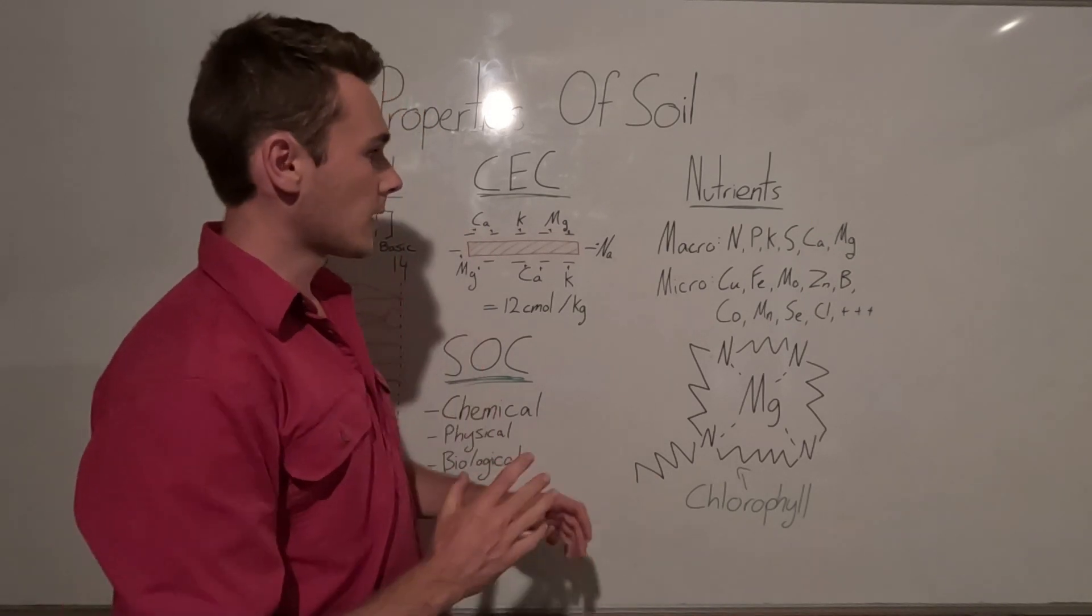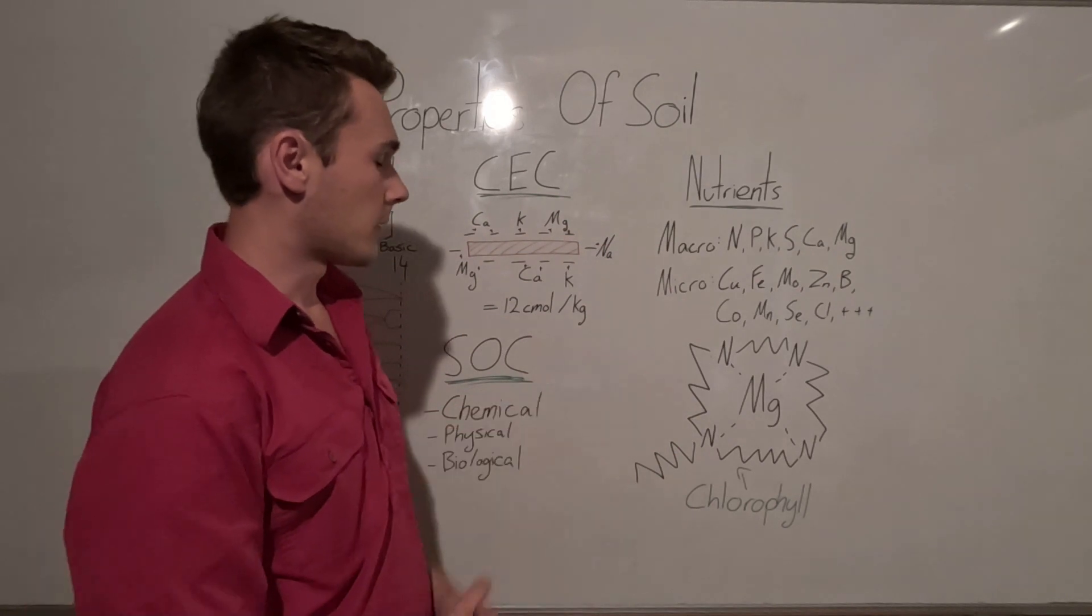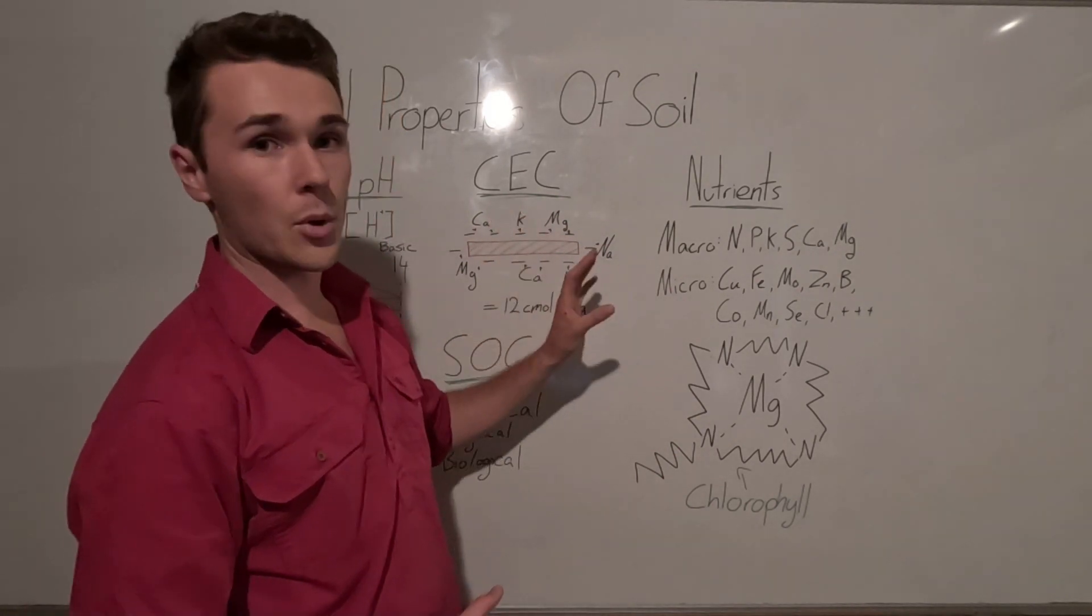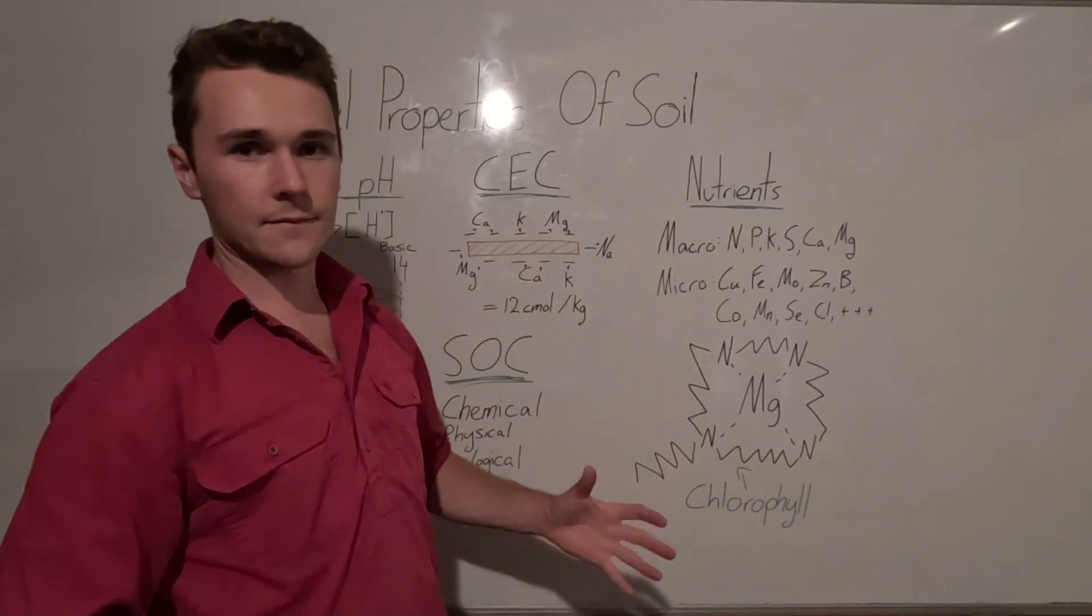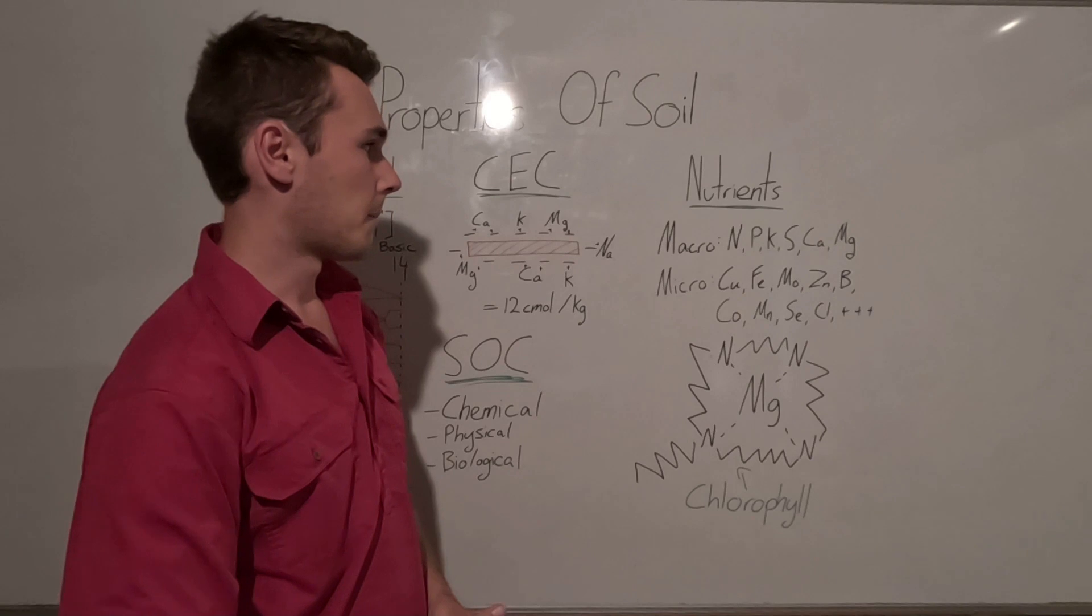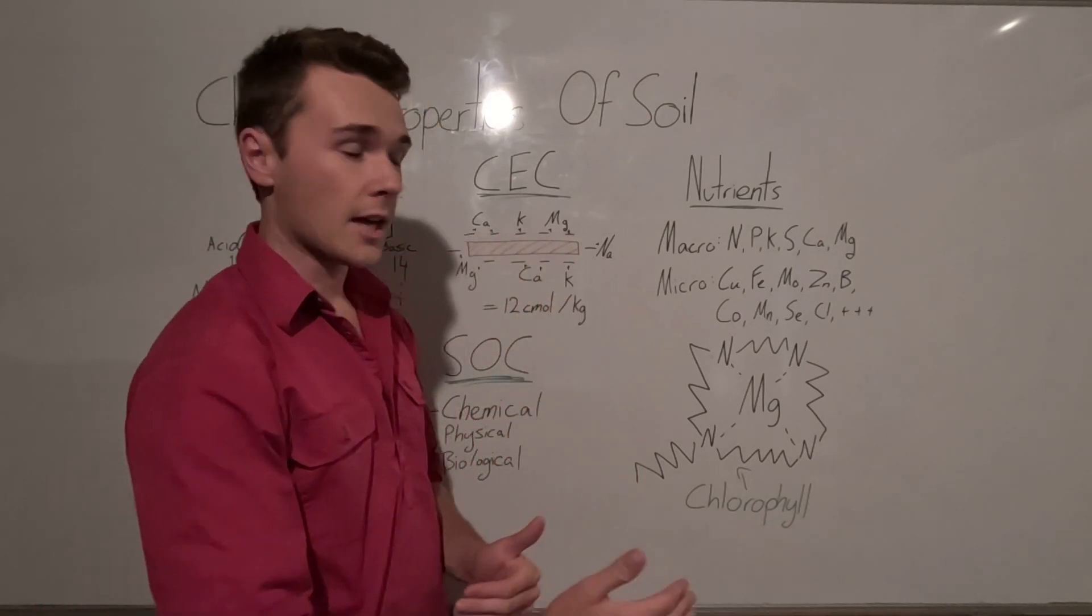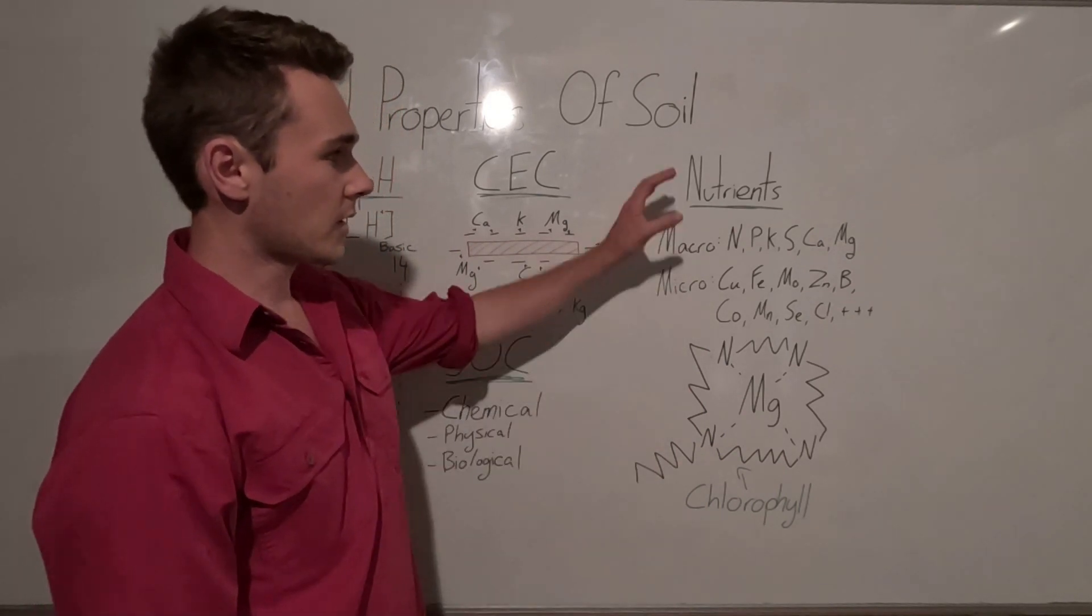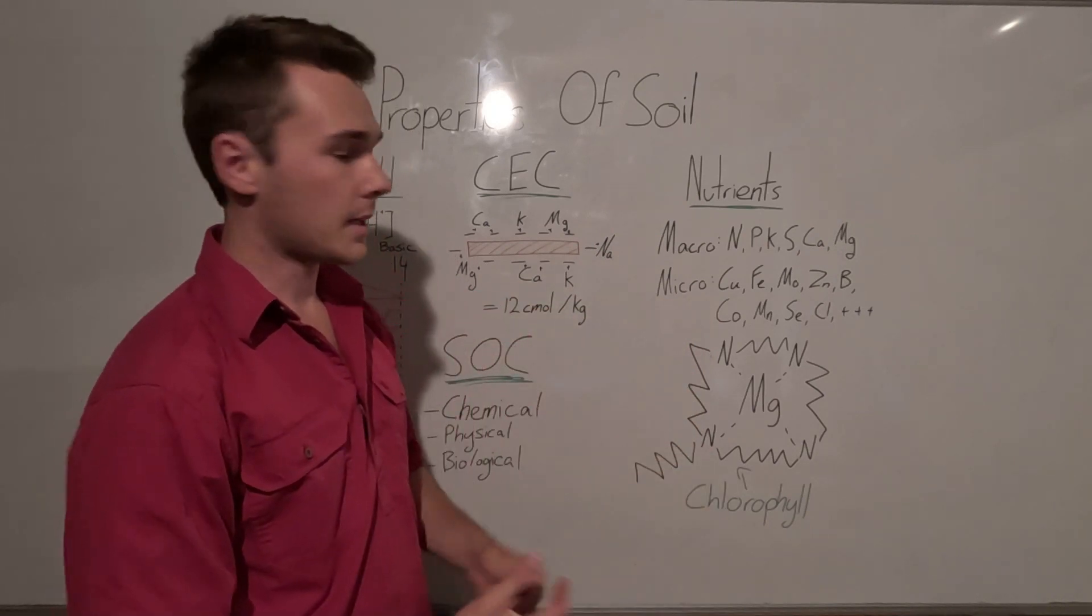It's interesting when many people think macros are more important than the micros, but they're actually just as important as each other. If you're missing just one of these micronutrients, your plant doesn't function properly and is going to be limited by that nutrient. So they're all important, just the amounts change, and it depends on the nutrient. Each of these nutrients will have a particular function in our plants.